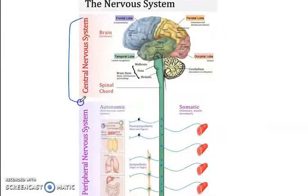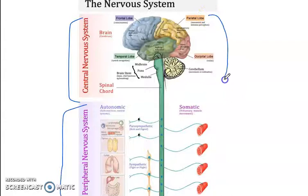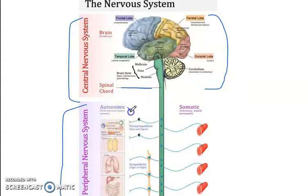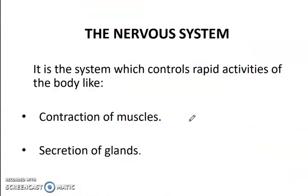The nervous system has two main parts: the central nervous system and the peripheral nervous system. The central nervous system includes the brain and the spinal cord. The peripheral nervous system includes autonomic and somatic nervous control from the nerves.